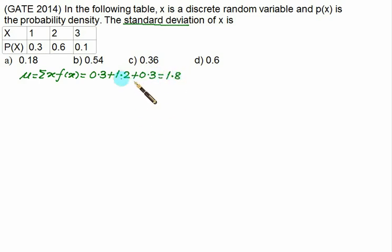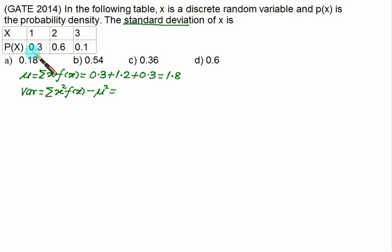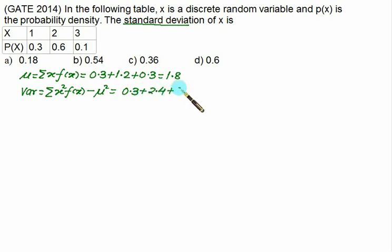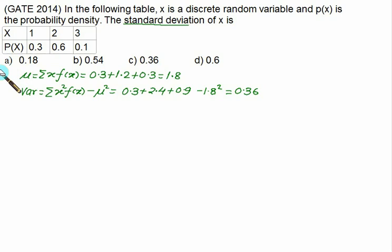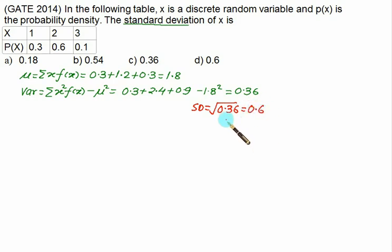Variance equals sigma of x squared f(x) minus mu squared. We have 1 squared into 0.3 is 0.3, 2 squared is 4 into 0.6 is 2.4, 3 squared is 9 into 0.1 is 0.9, minus 1.8 squared. The answer equals 0.36. Standard deviation is the square root of variance, that is the square root of 0.36, which is 0.6. So choice D is the correct choice.